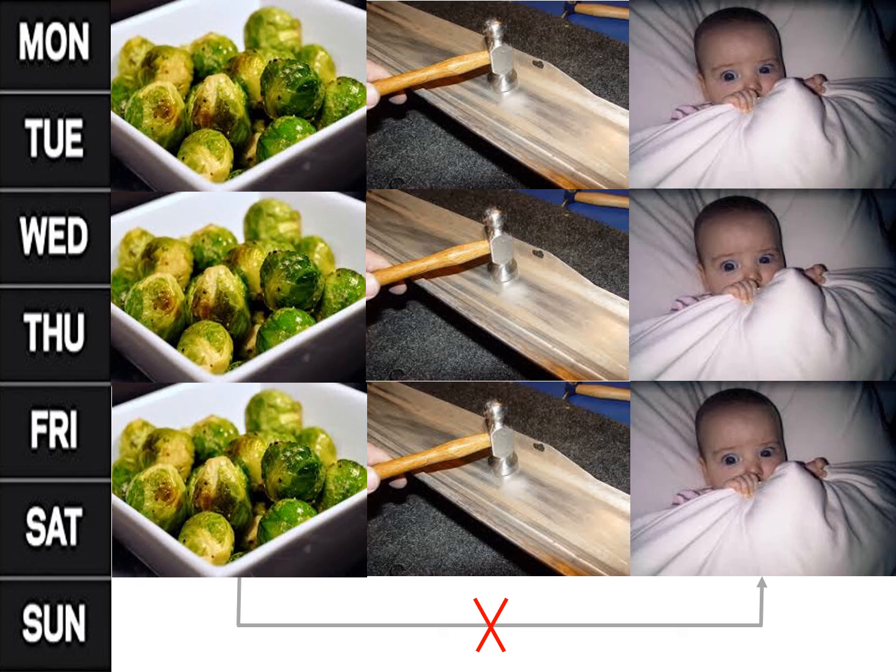Therefore, we might be programmed to learn some associations more rapidly than other associations. We might be biologically prepared to learn the association between contaminated food and nausea more rapidly than between contaminated food and fear. Likewise, we might be more biologically prepared to learn the association between snakes and fear than between balls and fear.